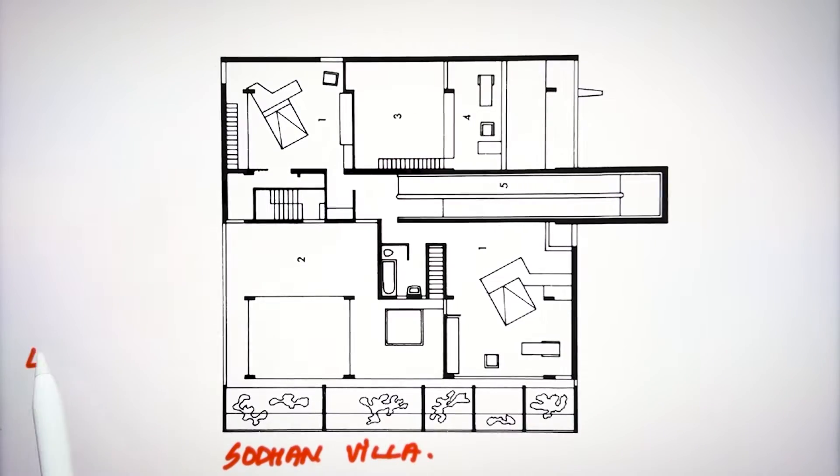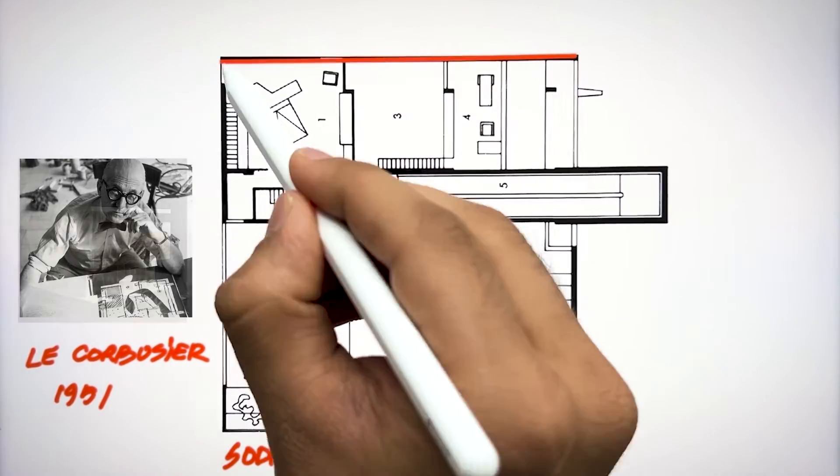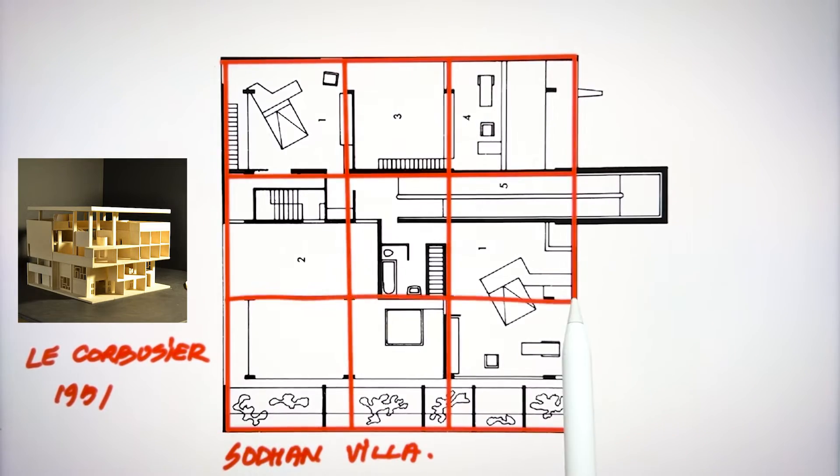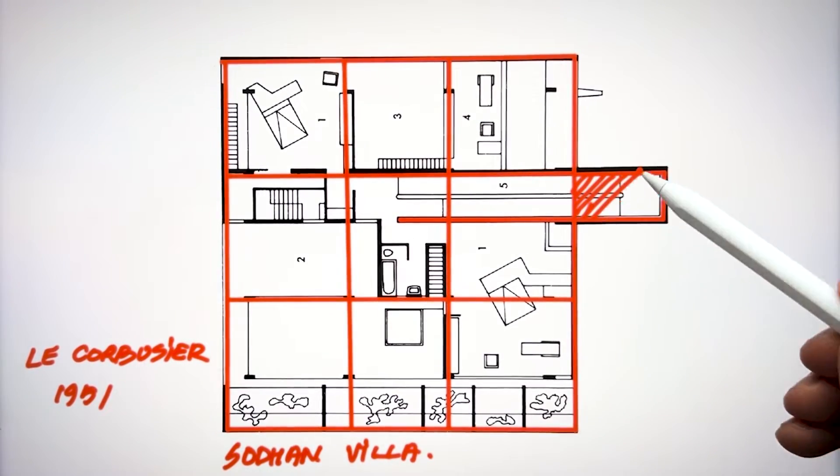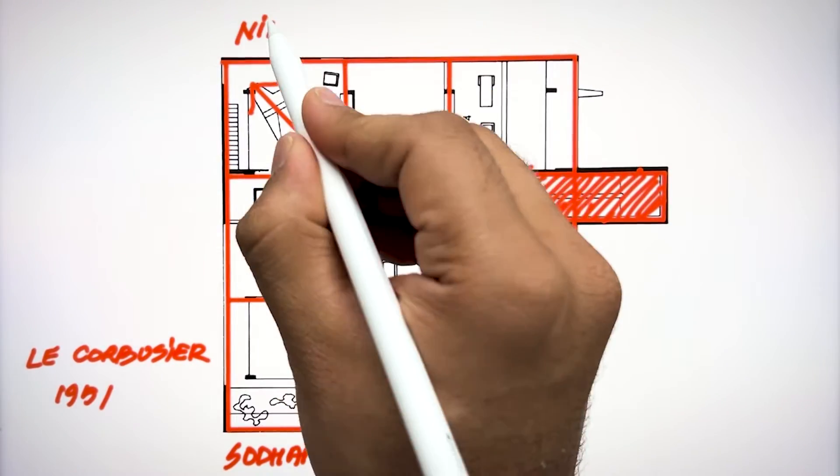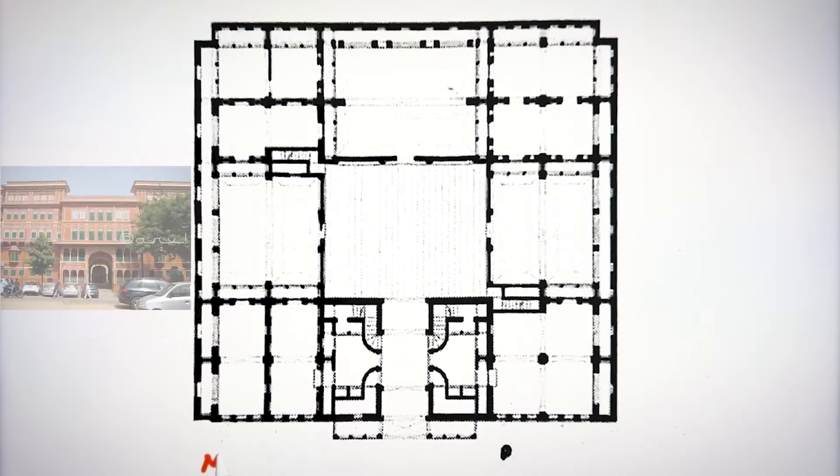The next project of the nine grid system was Villa Shodhan. It was designed by Le Corbusier in 1951 in Ahmedabad. Here also Corbusier used the system of cubism with the grid geometry. Here Corbusier changed the axis of these nine grids and extended the ramp outward.